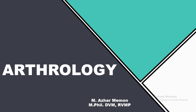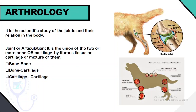What is Arthrology? Arthrology is the scientific study of the joints and their relation in the body of an animal. A joint is also known as articulation. It is the union of two or more bones or cartilage by fibrous tissue, cartilage, or a mixture of fibrous tissue and cartilage. A joint can be between bones, between bones and cartilage, and between cartilages.